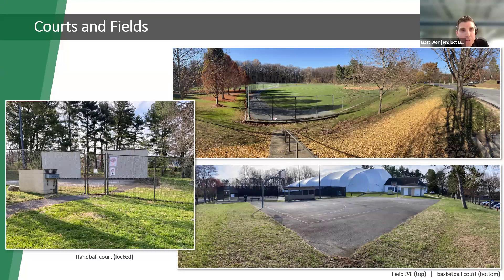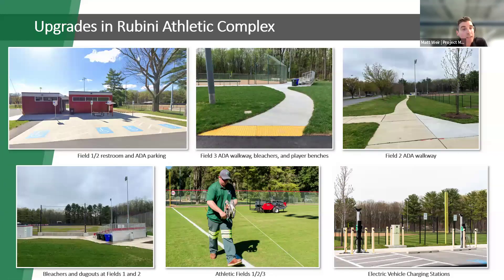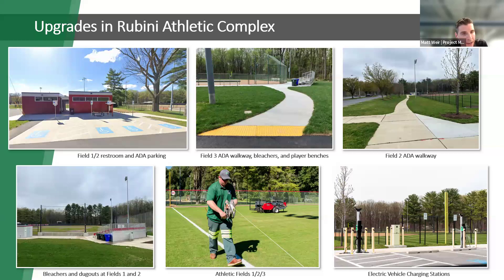The active recreational amenities include baseball fields, basketball, tennis, and the handball court, but these facilities do not currently have ADA access. There's also a lack of good seating and social hangout spaces. Despite these challenges, Montgomery Parks has made several recent upgrades: a restroom facility with ADA parking, ADA access to field number three with player benches and bleachers, new bleachers and dugouts at fields one and two. Fields one, two, and three are the premier diamond fields — they have irrigation, lighting, and are almost permitted twice as much as fields four, five, and six. Just recently we also did a ribbon cutting for electric vehicle charging stations.